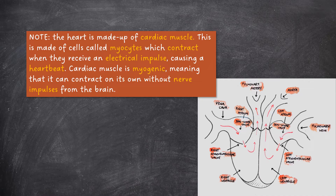The heart is made up of cardiac muscle, consisting of cells called myocytes, which contract when they receive an electrical impulse, causing a heartbeat. Cardiac muscle is myogenic, meaning that it can contract on its own without nerve impulses from the brain.